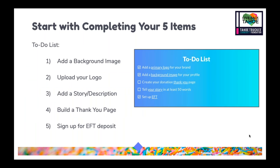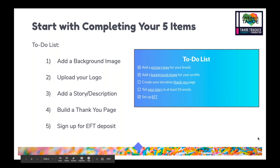On your homepage there's a to-do list for any new organization to the platform. This to-do list will give you a breakdown of key things you want to fill out to make your page ready for GiveBackTahoe. Some of those key things we ask organizations to fill out are your background image, logo, adding in a description or story, adding in a thank you page, and setting up your EFT. If you fill out just those basics, you should be good to go for the event. As you fill those sections out, they will be checked off on your homepage so you know you've completed them. This is not required to participate, but it's a great guide to get started.